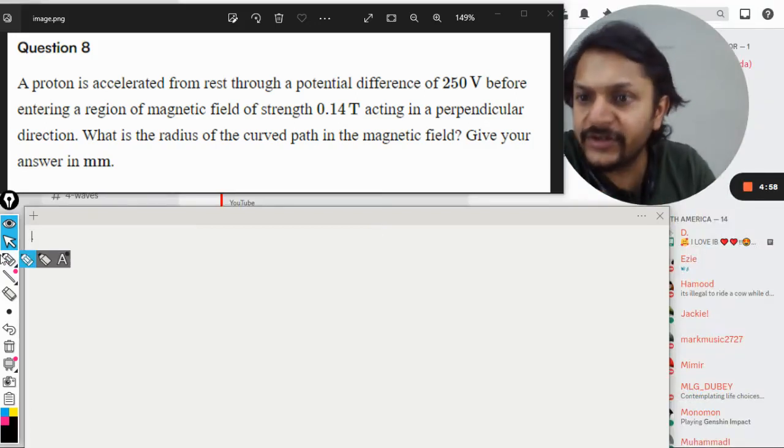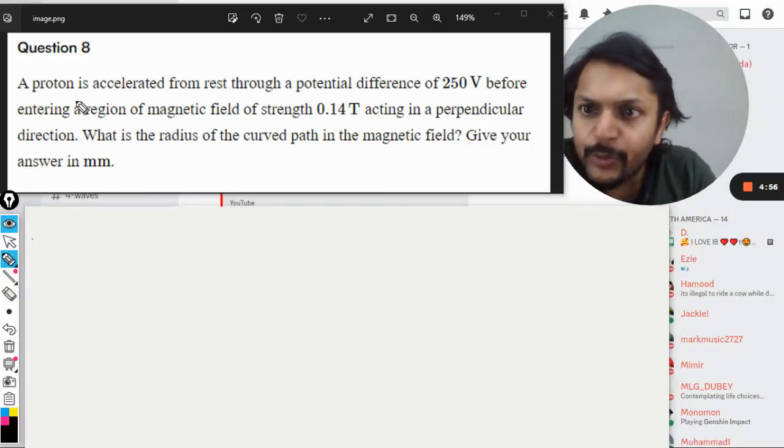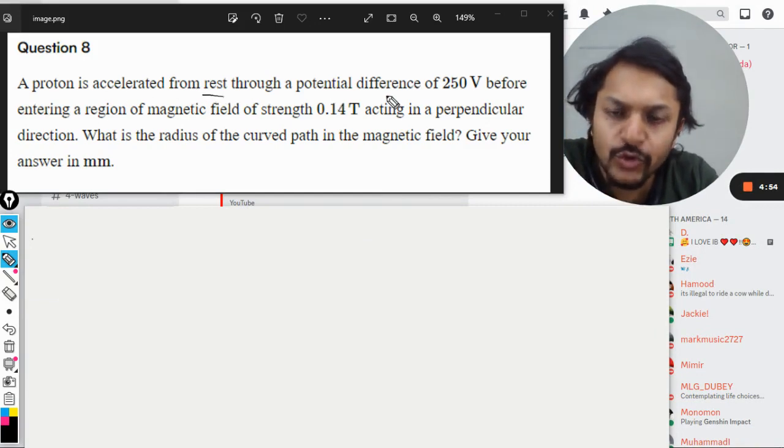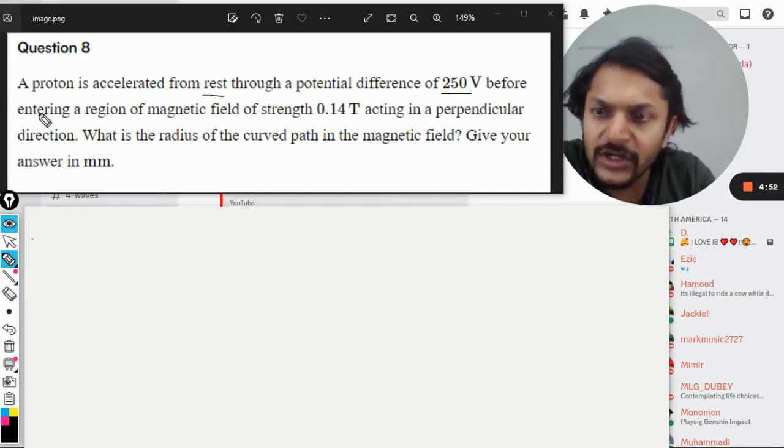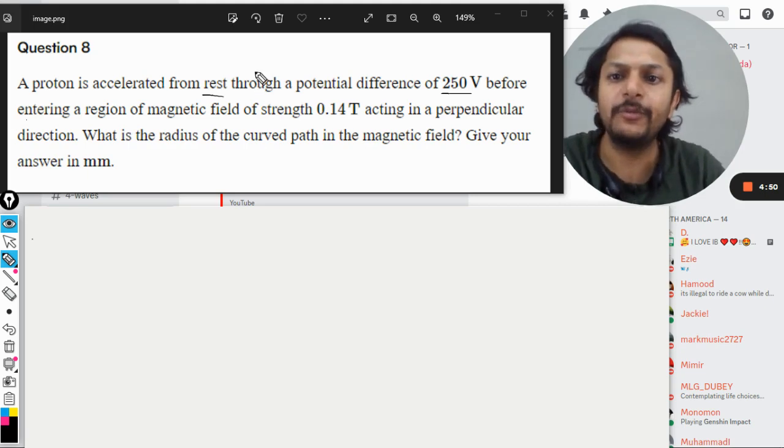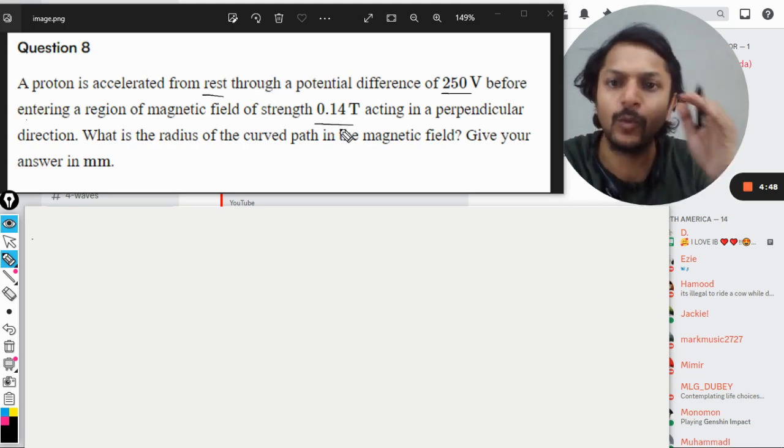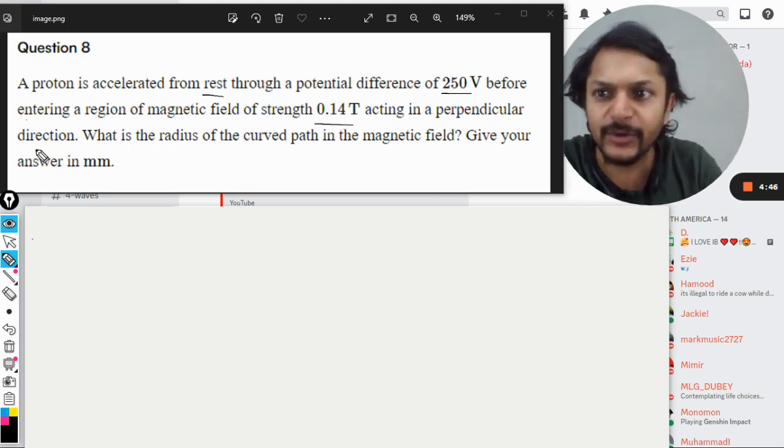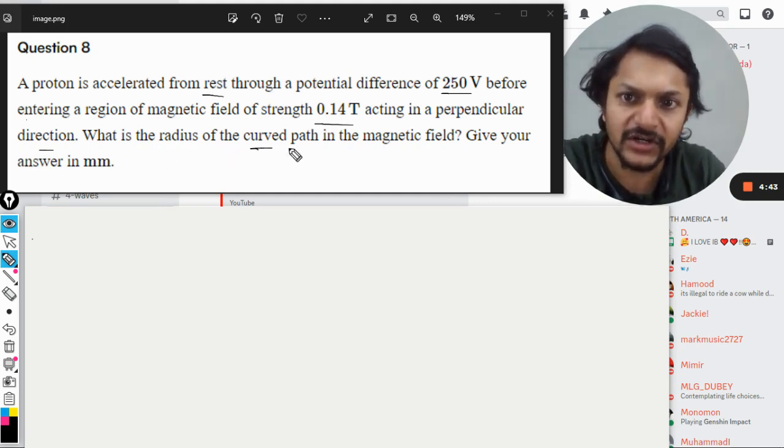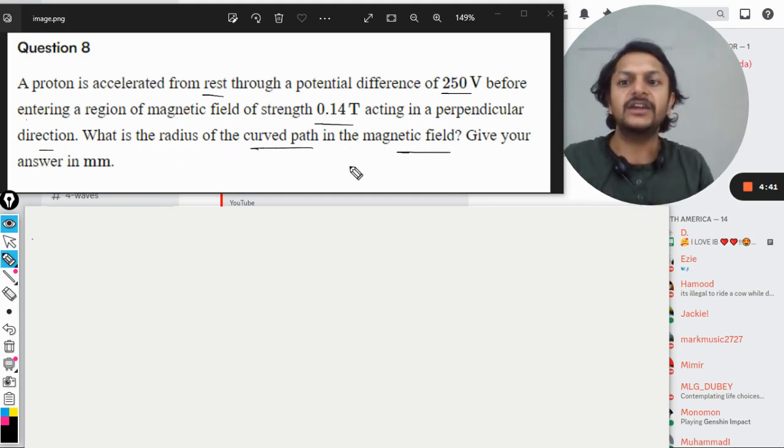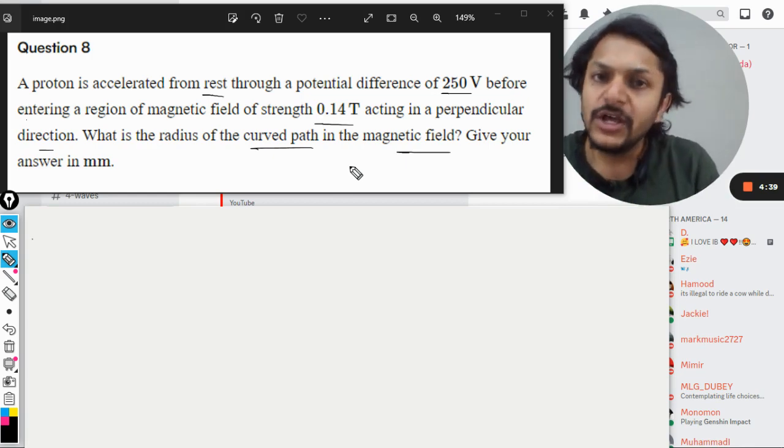Okay, dear students, let's see what is in this question. A proton is accelerated from rest through a potential difference of 250 volts before entering a region of magnetic field strength of 0.14 Tesla acting in a perpendicular direction. What is the radius of the curved path in the magnetic field? Give your answer in millimeters.